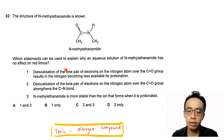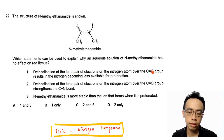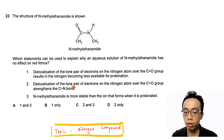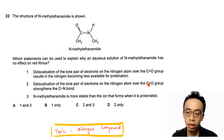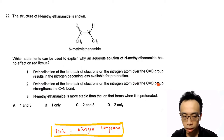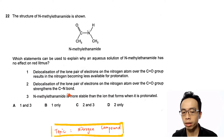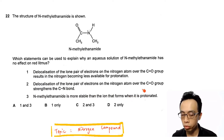Statement number 1: delocalization of the lone pair of electrons on the nitrogen atom over the C=O group results in the nitrogen becoming less available for protonation. Number 2: delocalization of the lone pair of electrons on the nitrogen atom over the C=O group strengthens the carbon-nitrogen bond. And number 3: N-methyl ethanamide is more stable than the ion that forms when it is protonated.